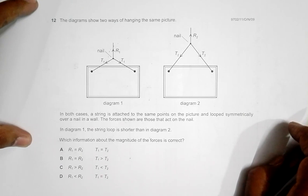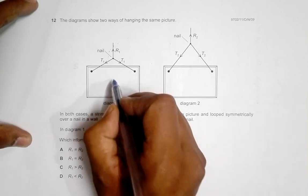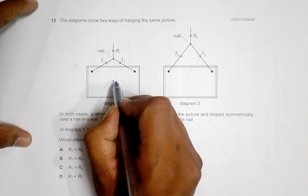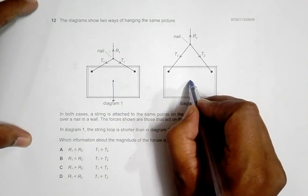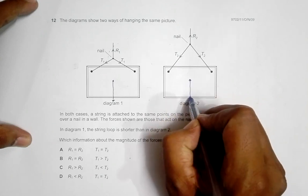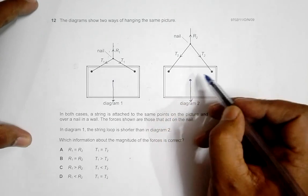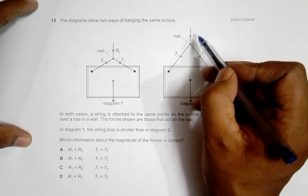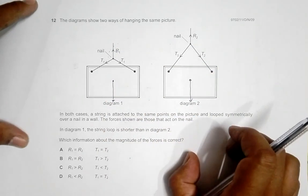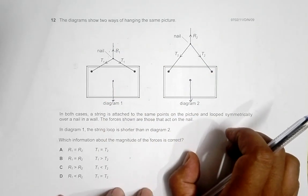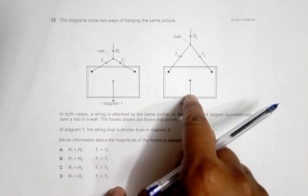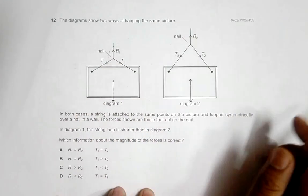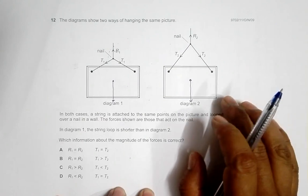One thing to remember is that the weight of this thing is the same in both cases. The weight acts along the exact center, somewhat like this. So if this is balanced, the forces R1 and R2 should also be the same. R2 should equal R1 since the picture is suspended in equilibrium.